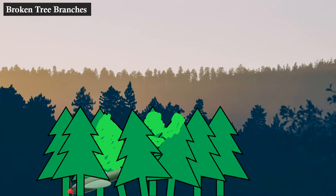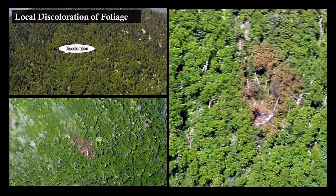Now as the crash becomes older, foliage will start to yellow as it dies, finally turning to brown. Here's a great example of discoloration as seen from the air. Once they zoom in, it's clear that quite a bit of damage has been done. This may have been from the initial crash, or burning wreckage could have ignited some of the surrounding foliage.